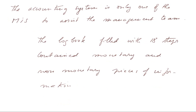The accounting system is only one of the MIS to assist the management team. In the previous example, the logbook filled with 18 steps contained monetary as well as non-monetary pieces of information. Let's look at what that is.